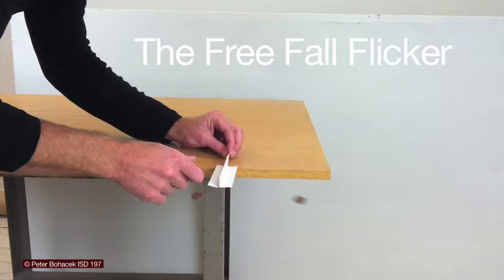We're going to do an experiment using something called the free fall flicker to answer that question. We'll use two pennies. One of them will get pushed sideways, and at the exact same time, another penny will be dropped downward.